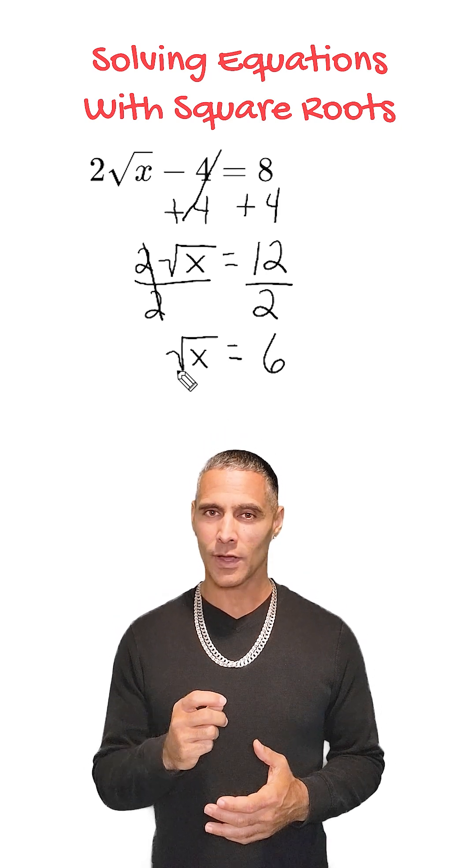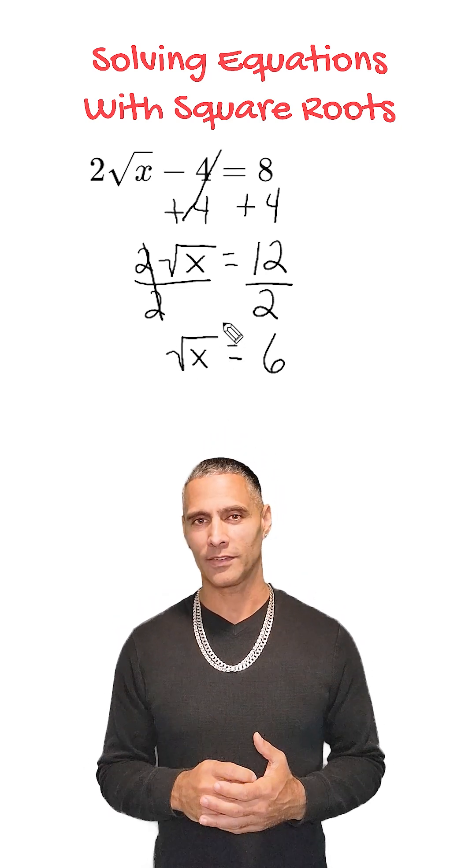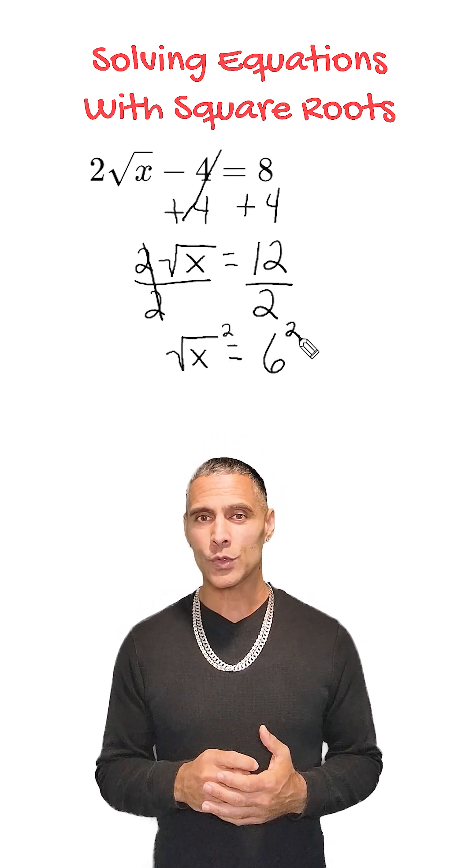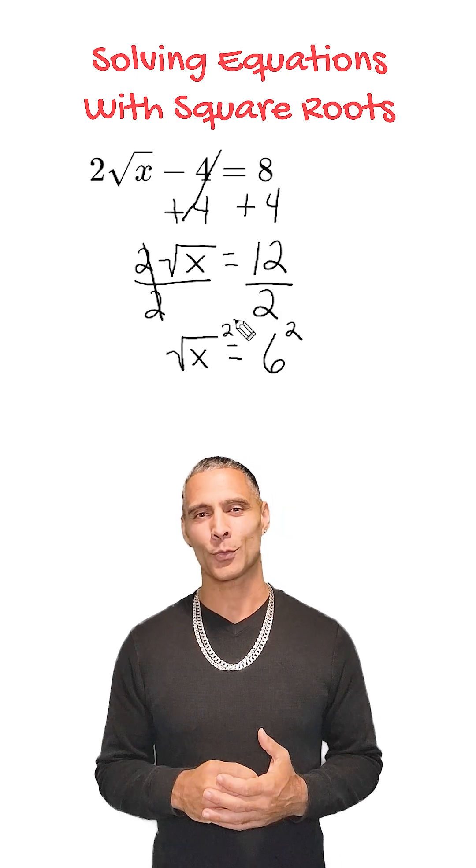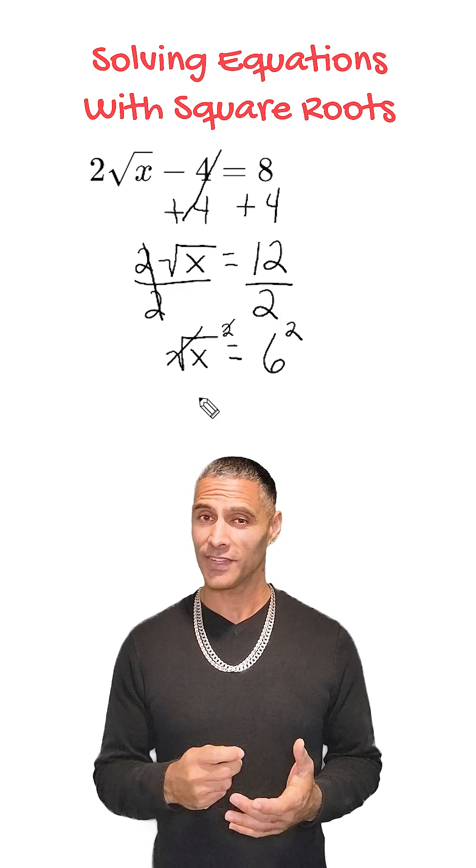To get rid of the square root and solve for x, we square both sides of the equation. Squaring the square root on the left-hand side cancels out the square root, leaving us with just x.